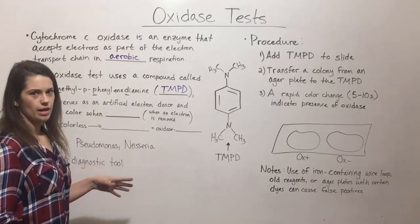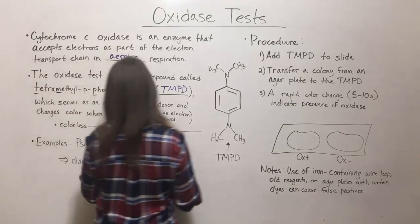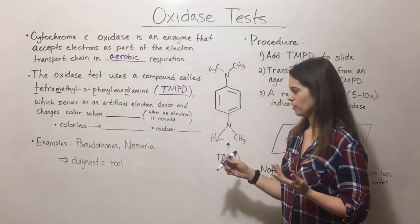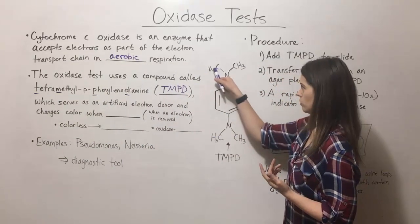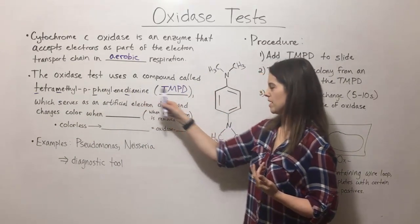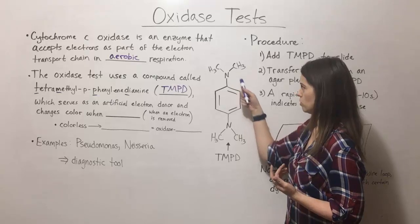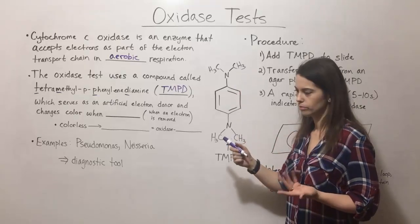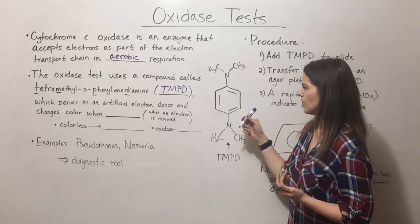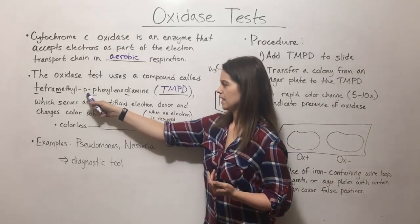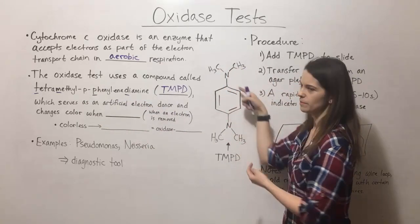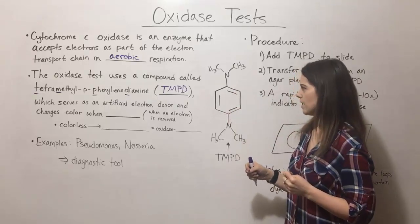If you've got some organic chemistry background, you know that tetramethyl refers to four methyl groups — those are the four CH3 groups. The diamine refers to the two nitrogen components, and the P refers to the fact that they're on opposite sides of the benzene ring. That's where we get that name.